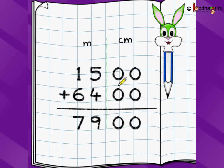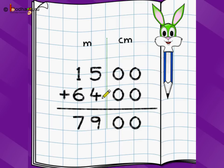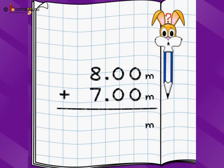Even if the centimeters were non-zero — say 15 meters and 10 centimeters plus 64 meters and 20 centimeters — you can continue to do it exactly the same way. This is nothing but four-digit addition; the only thing is the four digits are separated by a small line I have drawn to separate meters from centimeters, so when you read the answer you know what it is: 79 meters and 00 centimeters.